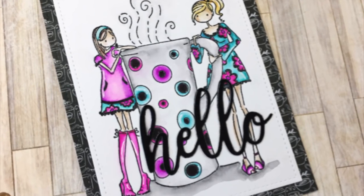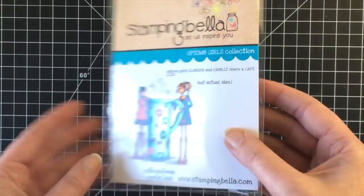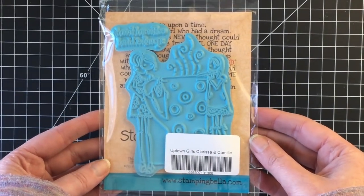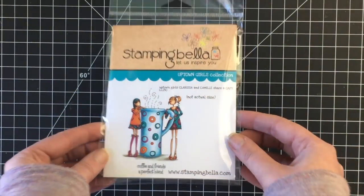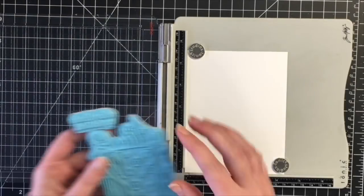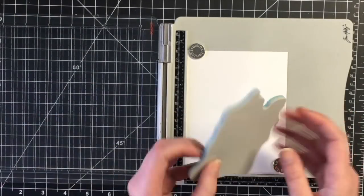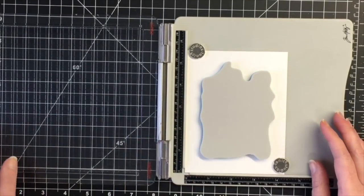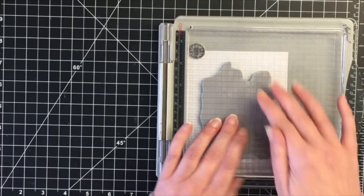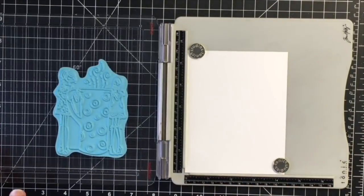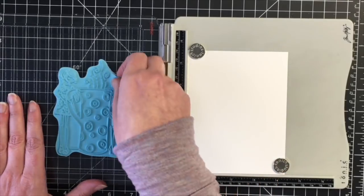Hello everybody, it's Jen. Happy New Year. I hope 2019 is a great year for you. I have a project for Scrapping for Less today. I'm using this Stamping Bella stamp called Uptown Girls Clarissa and Camille share a cafe. It's a super adorable stamp.